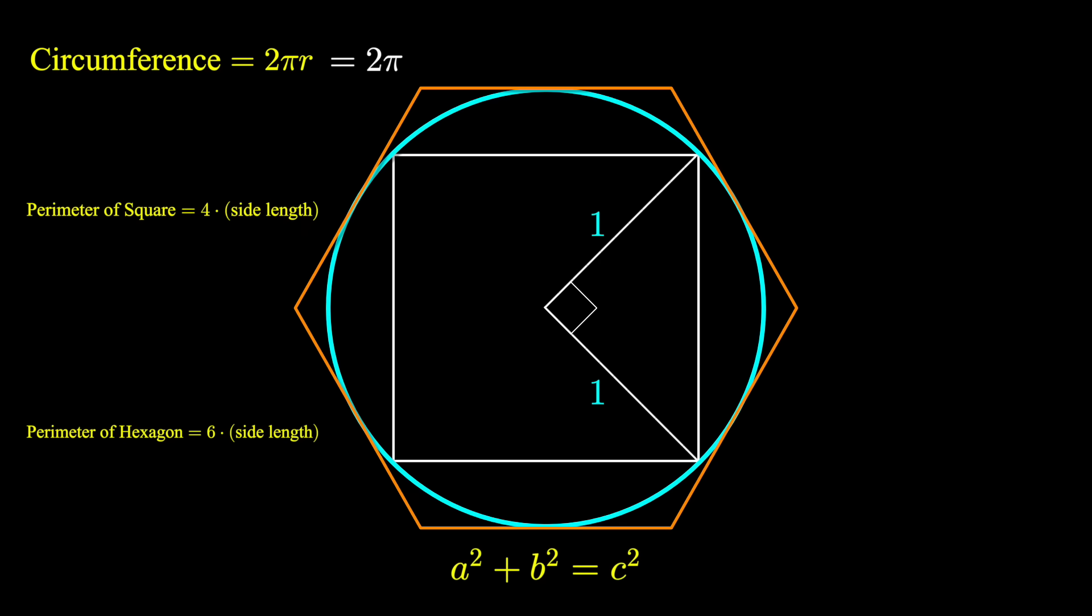By the Pythagorean theorem, this square's side length is root 2, hence the perimeter of the square is 4 root 2.